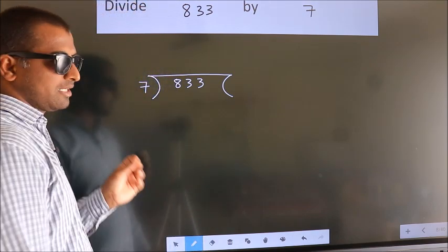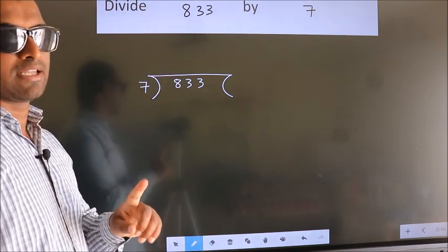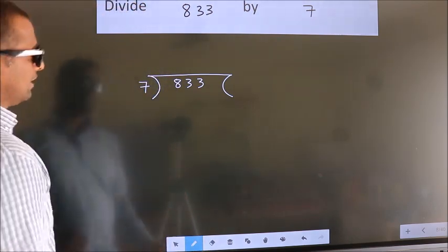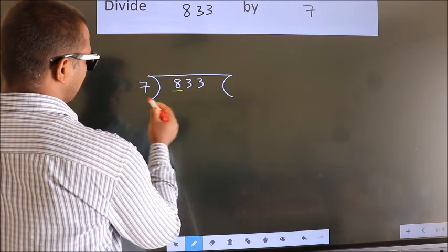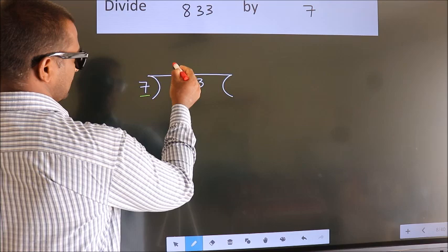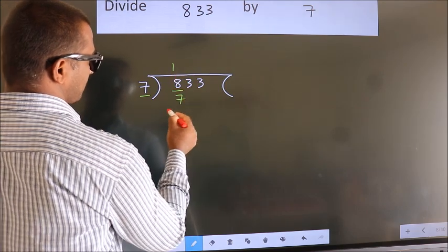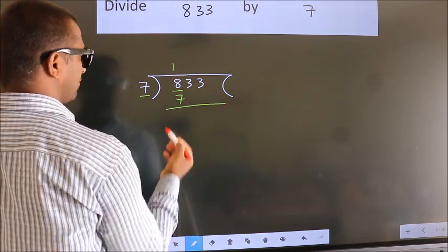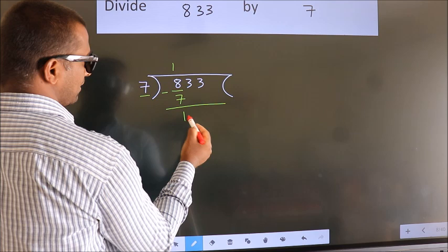This is your step 1. Next, here we have 8, here 7. A number close to 8 in the 7 table is 7 once 7. Now we should subtract. We get 1.